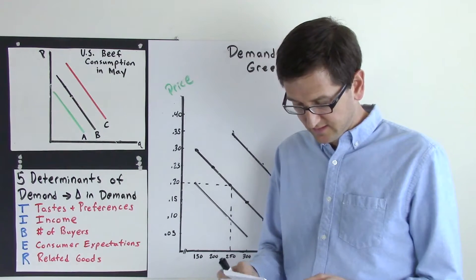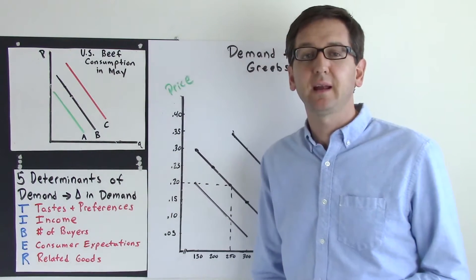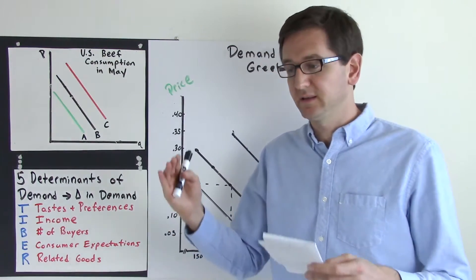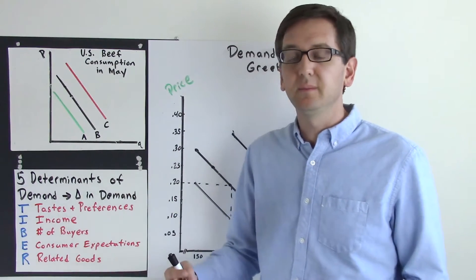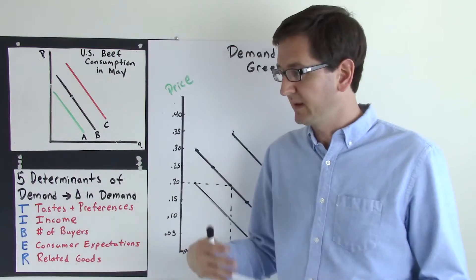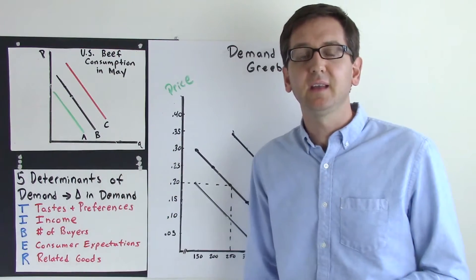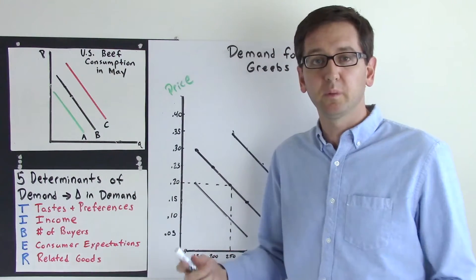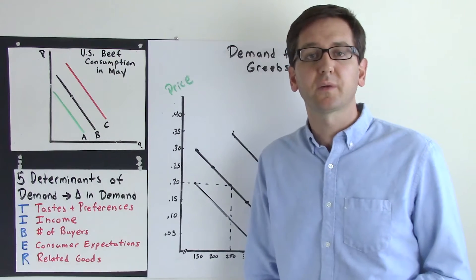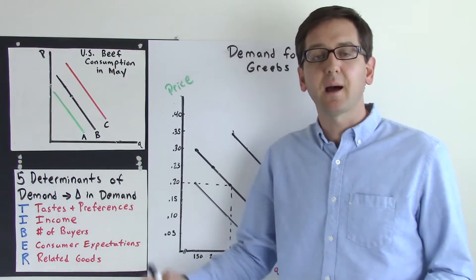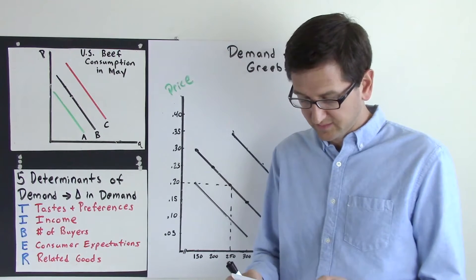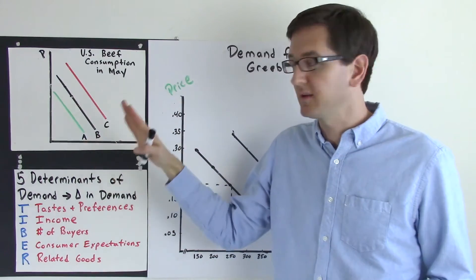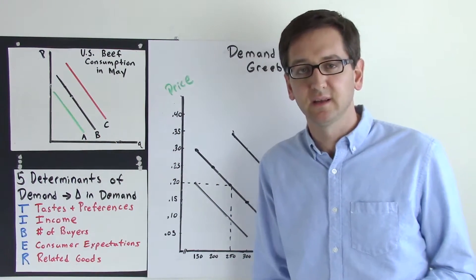Income: there's a recession for the sixth straight month in the United States. A recession means a decrease in gross domestic product, which usually means people are losing their jobs and have less disposable income. They would probably look for a cheaper alternative for their protein and stop purchasing beef, which is usually fairly expensive. That would shift our curve from demand curve B to demand curve A — a shift to the left or inward to show a decrease in demand.